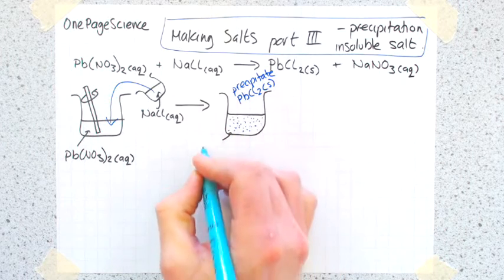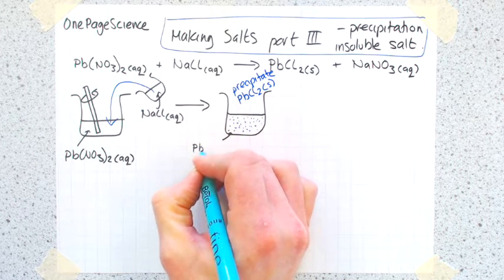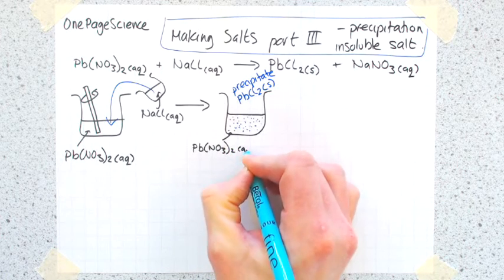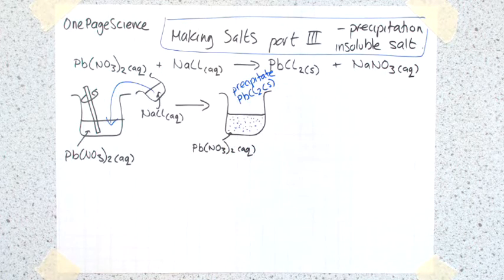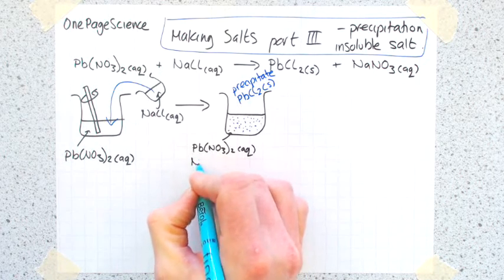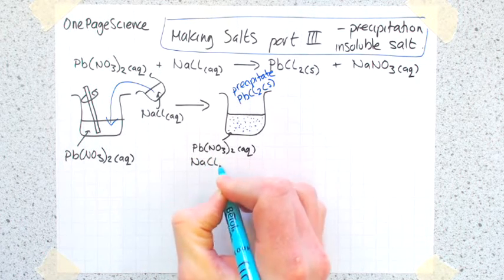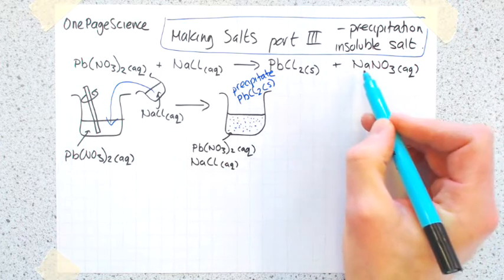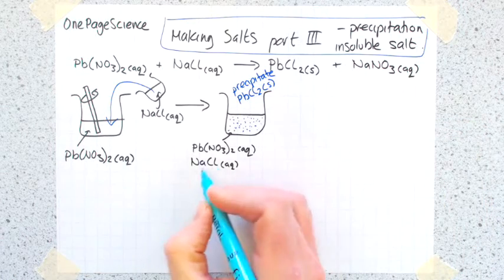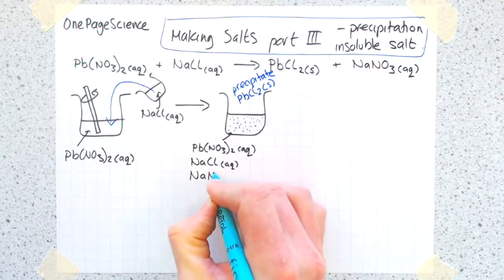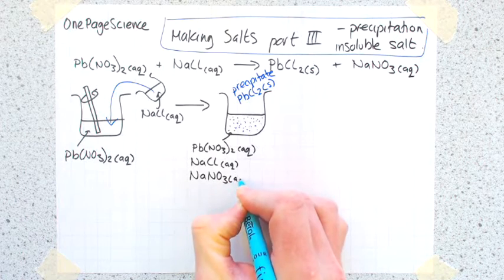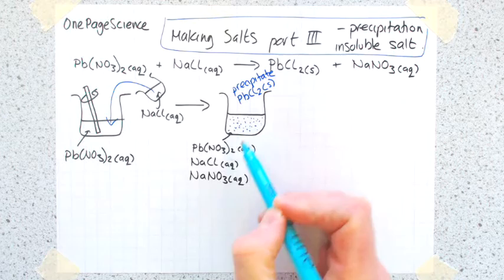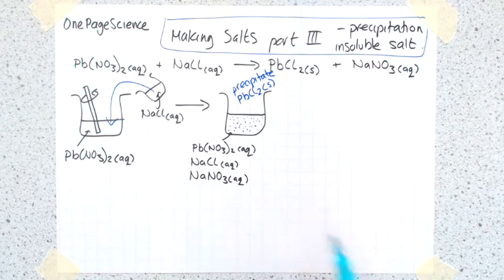You don't have to measure out exactly equal amounts because we're only interested in the solid. So in this solution there's going to be potentially a bit of Pb(NO3)2(aq), a bit of sodium chloride, and definitely some sodium nitrate because that's the byproduct we've formed. The job now is to separate this solid from the solution.